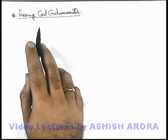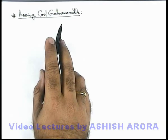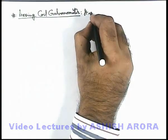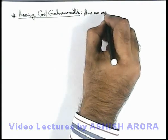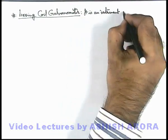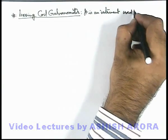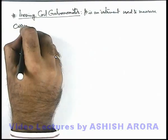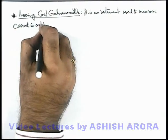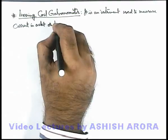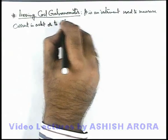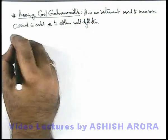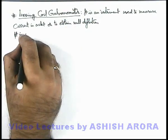Let's discuss the concept of moving coil galvanometer. About a moving coil galvanometer we can write that it is an instrument used to measure current in a circuit, or to obtain null deflection point in a circuit.